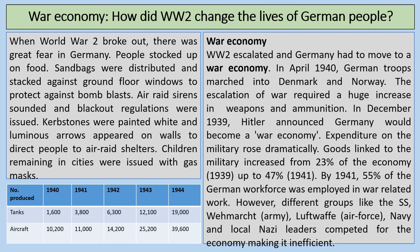The idea of a war economy is that the whole German economy needed to be directed towards the war. In April 1940, German troops marched into Denmark and Norway, and the escalation of the war required a huge increase in weapons and ammunition. In December 1939, Hitler had announced that Germany would become a 'war economy.' Expenditure on the military rose dramatically from 1939 into 1940. Goods linked to the military increased from 23% of the economy in 1939 up to 47% in 1941. By 1941, 55% of the German workforce was employed in war-related work.